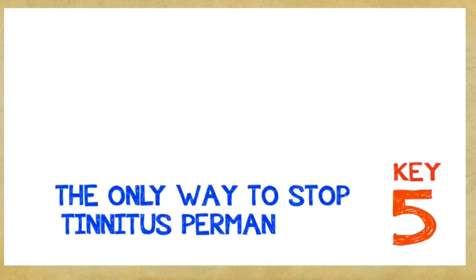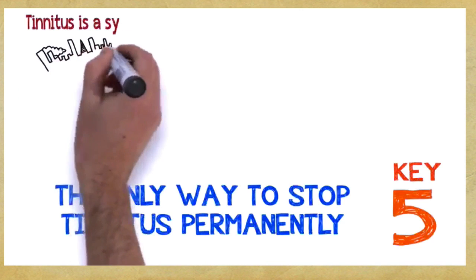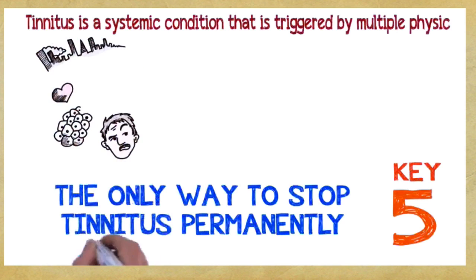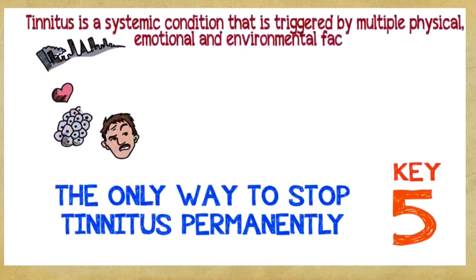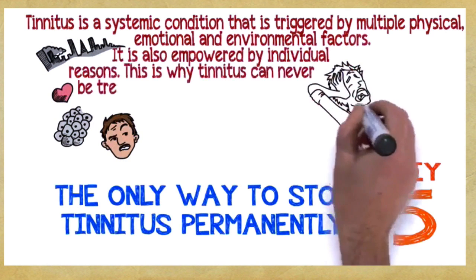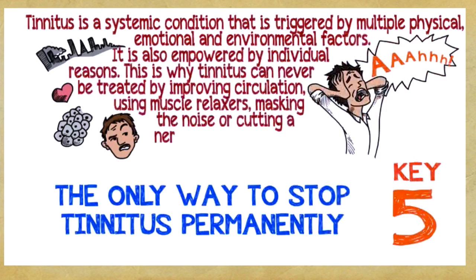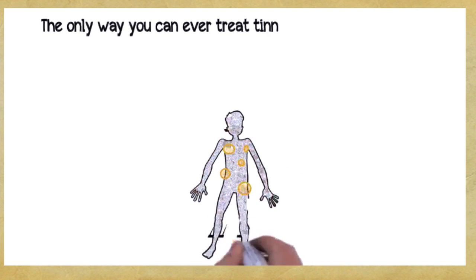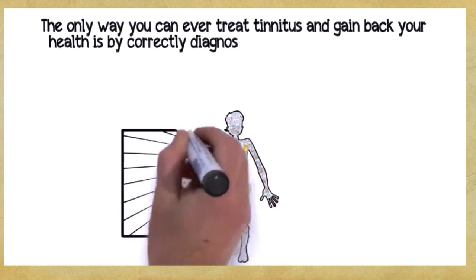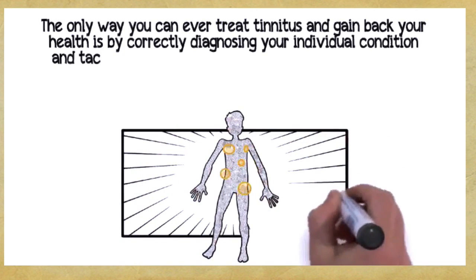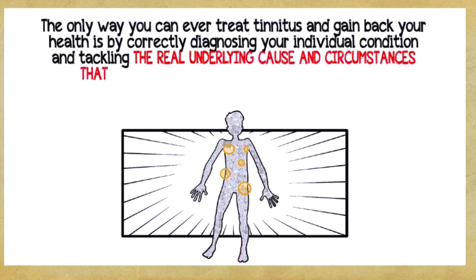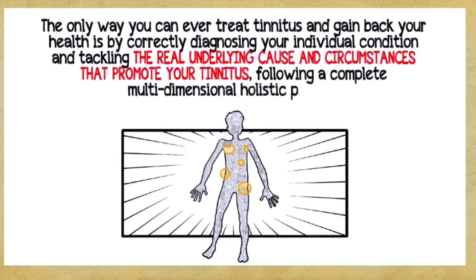Key number five. The only way to stop tinnitus permanently. Tinnitus is a systemic condition that is triggered by multiple physical, emotional, and environmental factors. It's also empowered by individual reasons. This is why tinnitus can never be treated by improving circulation, using muscle relaxers, masking the noise, or cutting a nerve in your auditory system. The only way you can ever treat tinnitus and gain back your health is by correctly diagnosing your individual condition and tackling the real underlying cause and circumstances that promote your tinnitus, following a complete, multidimensional, holistic program.